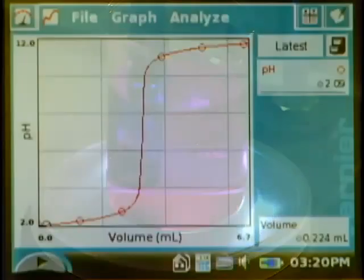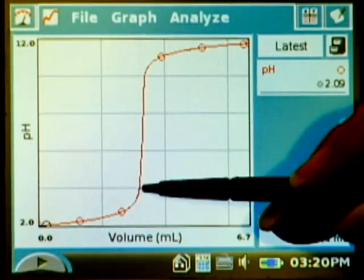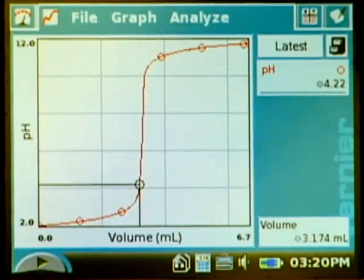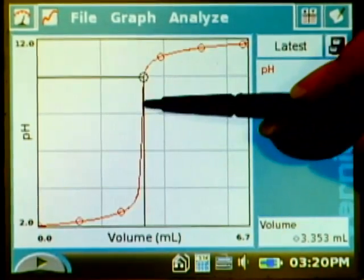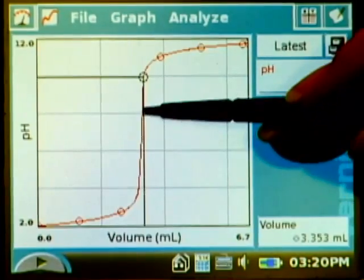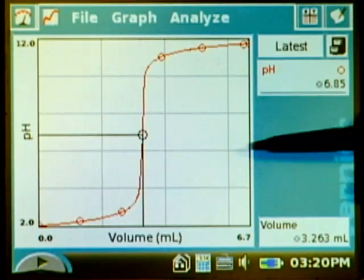Here's our finished data for our titration. When I tap somewhere on the graph it's going to give me the pH and volume for wherever I tapped on the data. We want to find the equivalence point and it's going to be somewhere in here but it's kind of hard to tell. So there are some better ways to tell than just by visually looking at the pH data.